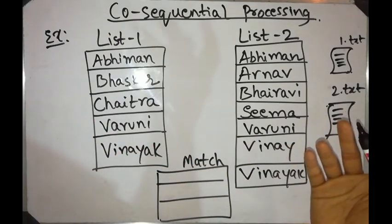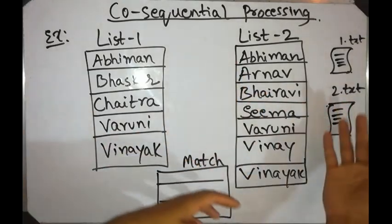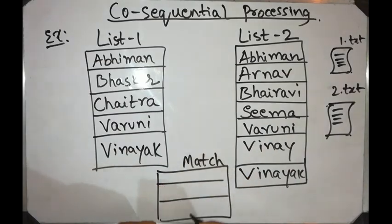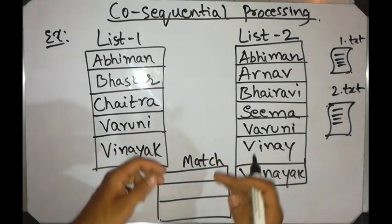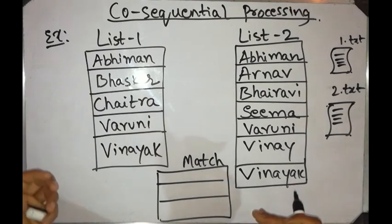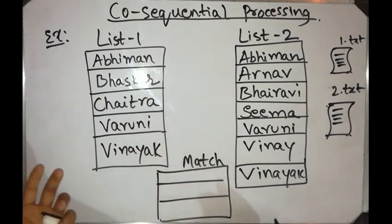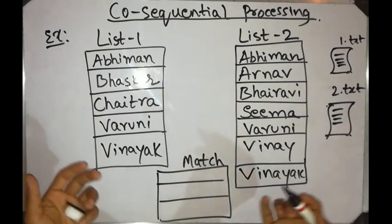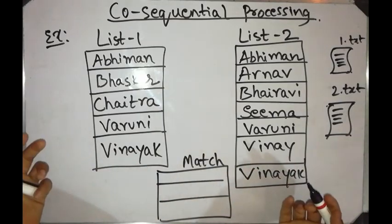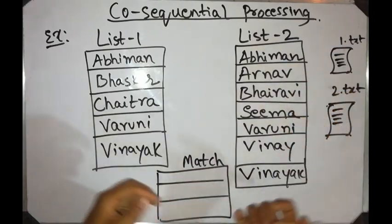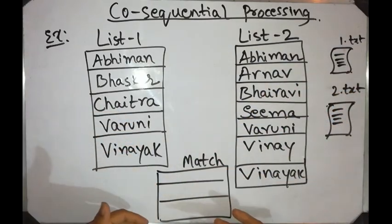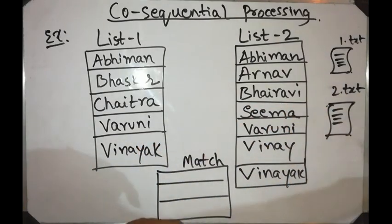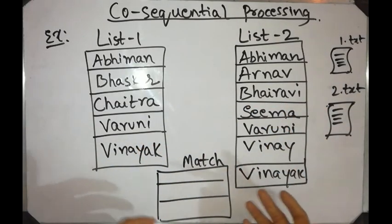For example, there is an attendance shortage list of two subjects, and we want a common student list with no repetitions of the same name. We want a list of all students who have a shortage in at least one subject. We can use co-sequential processing to come up with a list of all students who have a shortage across subject one, subject two, no matter how many subjects.